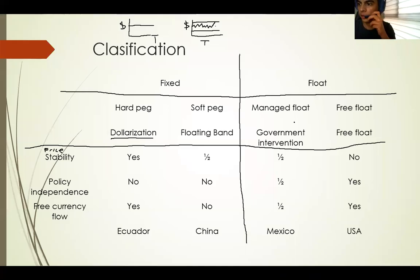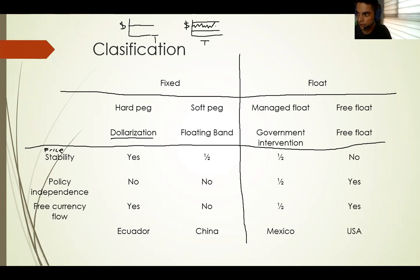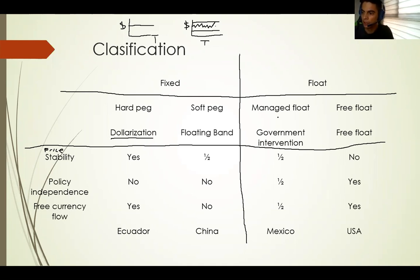Let me continue with the third system. This system is more on the right side, on the side of the floating systems — the free systems. These are the systems where the government doesn't intervene that much. Let me explain the managed float first, which is the not-extreme version of the float systems.